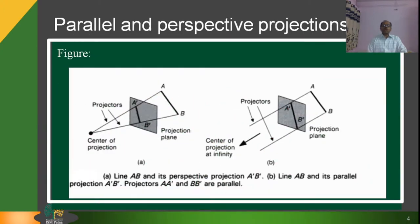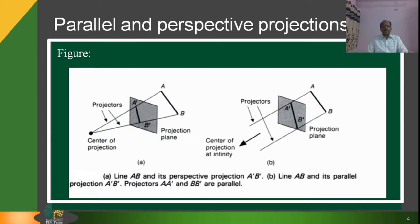On screen, you are seeing two figures A and B. In figure A, line AB and its perspective projection A'B' is shown, whereas in figure B, line AB and its parallel projection A'B' is shown. Projectors project A as A' and B as B'.